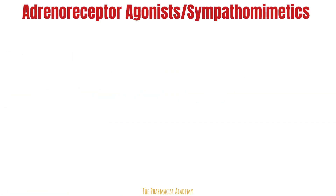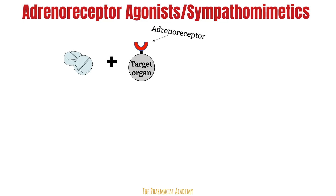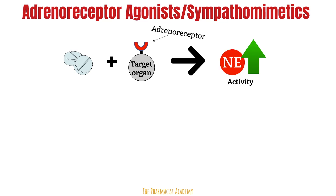First, adrenergic receptor agonists and sympathomimetics. Agonists or mimetics are drugs that mimic the actions of something in the body, such as a hormone or neurotransmitter. In this case, the neurotransmitter being mimicked is norepinephrine. So when these drugs bind to the adrenergic receptor on the target organ, we get the same response as if the real norepinephrine was bound to that receptor, increasing the activity of norepinephrine and giving us more fight or flight response. An example of an adrenergic receptor agonist or sympathomimetic is phenylephrine.